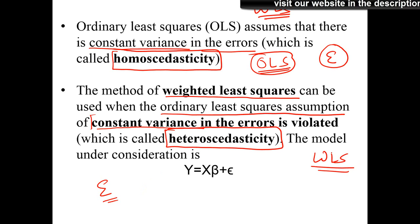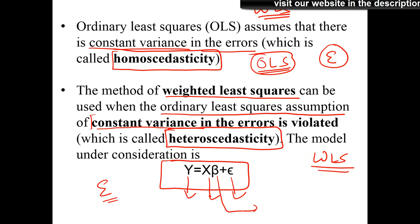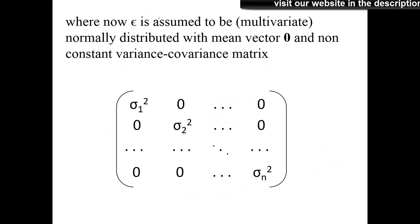There are other means of getting rid of heteroscedasticity, but one way is using WLS instead of OLS. The model we are considering is a simple linear regression model where Y is the dependent variable, X is the independent variable, epsilon is the error term, and beta is the set of parameters. The error term epsilon is assumed to have a multivariate normal distribution with mean 0 and constant variance.